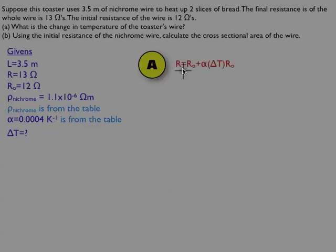So our final resistance is going to be equal to our initial resistance plus the change in resistance due to the change in temperature. So that's what we're after is a change in temperature in that formula.